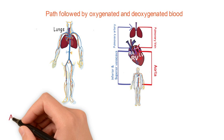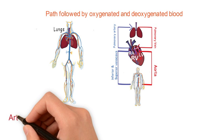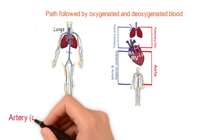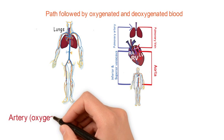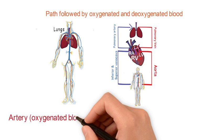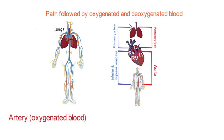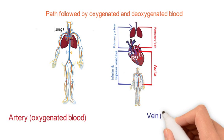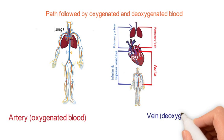Often we get confused with arteries and veins. An easy way to remember: artery starts with the letter A, and 'away' also starts with A. So arteries, except the pulmonary artery, carry oxygenated blood away from the heart. Veins, except the pulmonary vein, carry deoxygenated blood and deliver it to the heart.